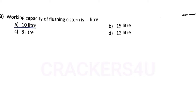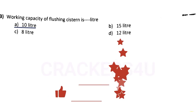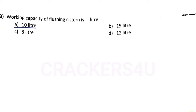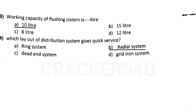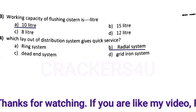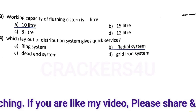Question number twelve: capacity of flushing system is — answer option A, 10 litre. Question number thirteen: which layout of distribution system gives quick service — answer option B, radial system.